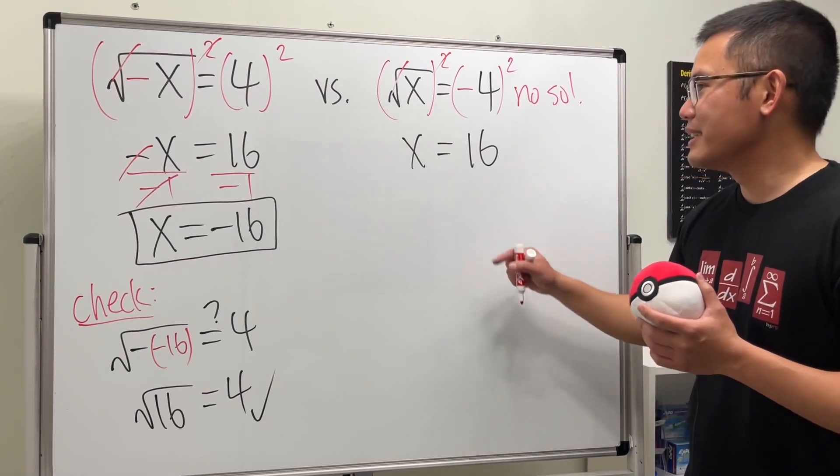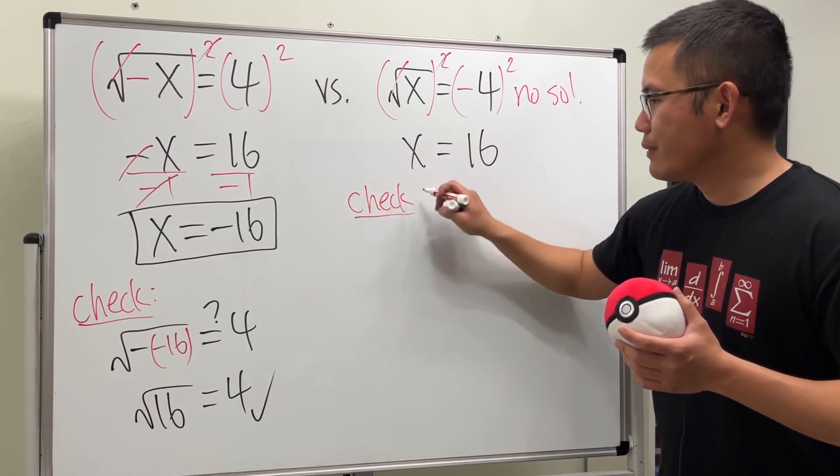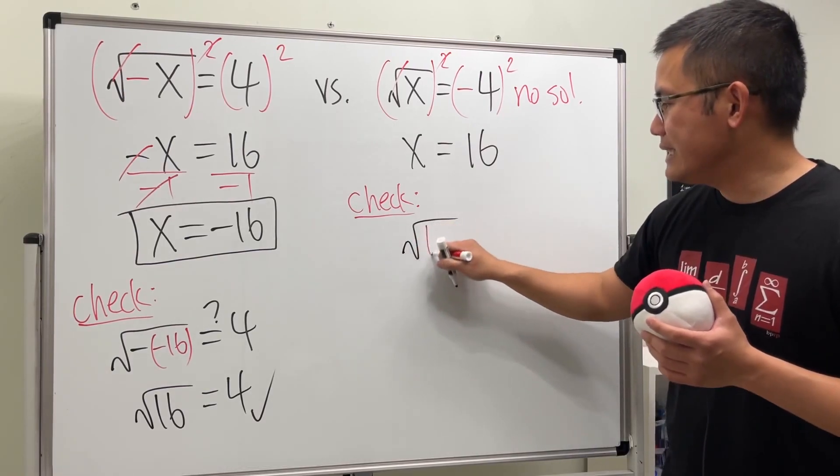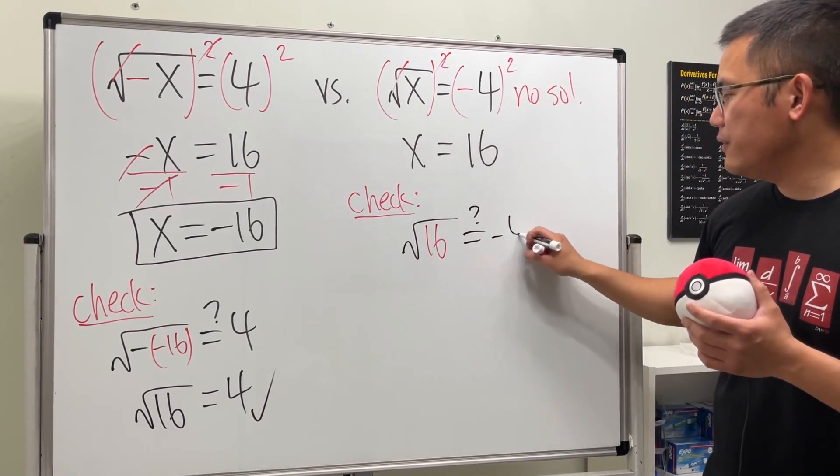No, it's not. Why? Because let's just go and double check. Put 16 back to the original equation. We are looking at square root of 16, and are we going to get negative 4?